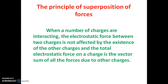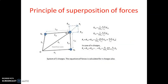Now we will see the diagrammatic representation. We are considering three charges Q1, Q2, and Q3 at distances R1, R2, and R3 from the origin. The distance between Q2 and Q3 is written as R23, and between Q1 and Q3 as R13. The force acting on Q1 due to Q2, written as F12, is given by Coulomb's law: 1/(4πε₀) × Q1Q2/R12² × unit vector R̂12.